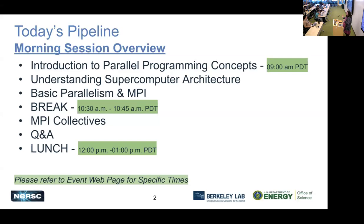MPI is a library that you use to write parallel codes on a distributed architecture. We're going to have a little break, and then we're going to talk about MPI collectives, which are advanced MPI functionality. We'll have time for Q&A and hands-on, where we're going to do exercises computing the best number of the world pod. And then we'll have lunchtime.